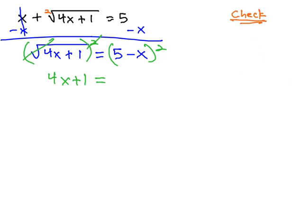Following that same pattern, we square 5 to get 25, multiply them together to get negative 5x, and negative 5x is negative 10x, and then finally square the last term to get x squared.